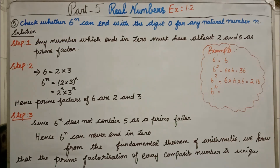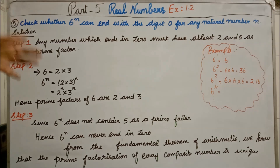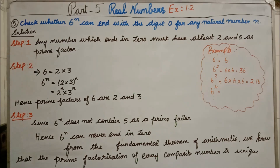First, we go for the solution. Step 1: Any number which ends in 0 must have at least 2 and 5 as prime factors. If any number wants to end in 0, it must compulsorily have 2 and 5 as prime factors.